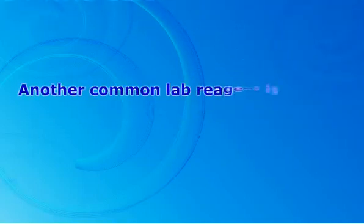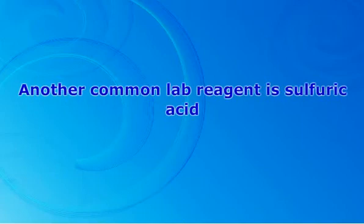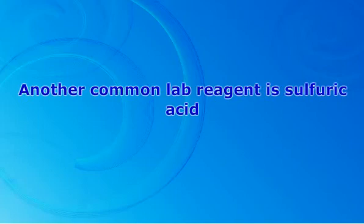Another common lab reagent is sulfuric acid. This acid is also very corrosive because of its high acidity, and it has a very powerful dehydrating property. This chemical compound exists not just on our planet but also on Venus and in Europa, one of Jupiter's moons. According to experts, sulfuric acid production can be a very good indicator of how a country is doing economically, because sulfuric acid is one of the most widely used reagents in the world.